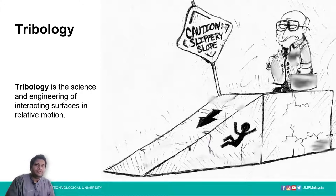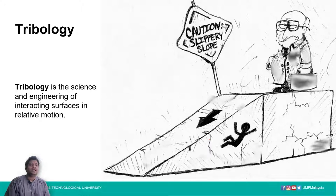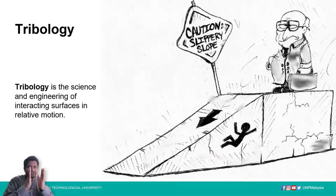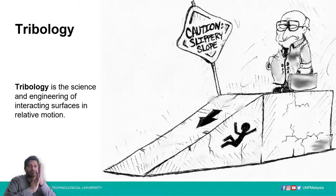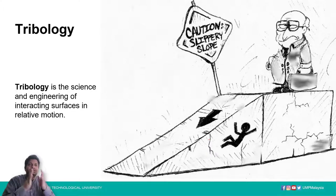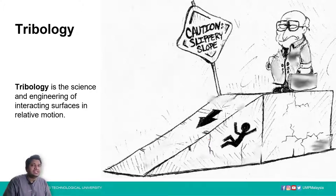Tribology is the science and engineering of interacting surfaces in relative motion. Two surfaces interact when they are touching each other and there is motion between them — either one is moving or both are moving. This is called relative motion, and tribology is the field of science in which surfaces are interacting and relatively moving.